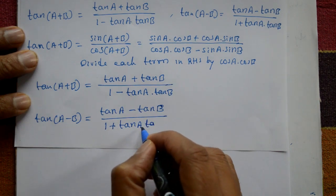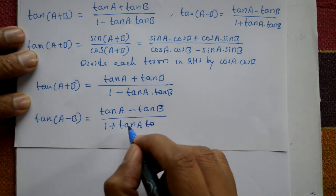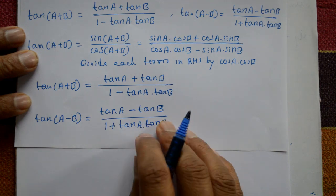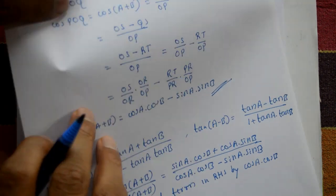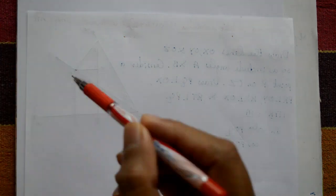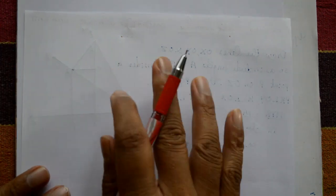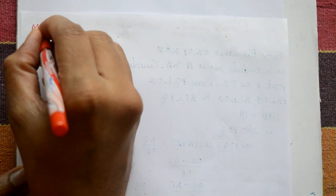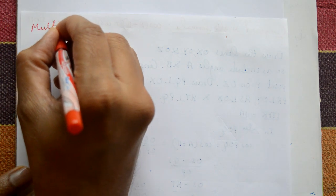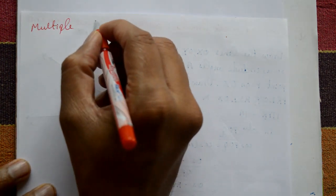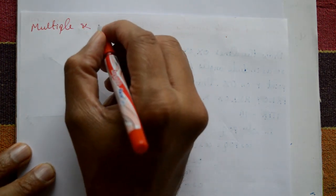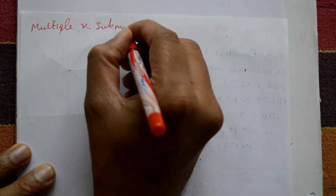Again b is equal to minus b, so tan(minus b) equals minus tan b. Minus minus gives plus, so we get tan a minus tan b divided by 1 plus tan a into tan b. Now go to the next topic: multiple and submultiple angle formulas.